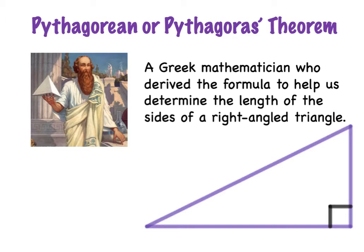So Pythagorean Theorem, sometimes also heard as Pythagoras' Theorem, is named after a Greek mathematician, and he derived or came up with the formula to help us determine the length of the sides of a right-angled triangle. Here we have a picture of a right-angled triangle, and remember right-angled means it has to have this symbol here showing it's a right angle, and right angles have a measure of 90 degrees.